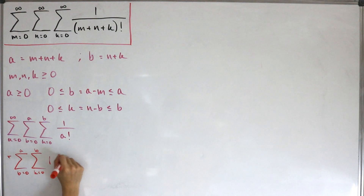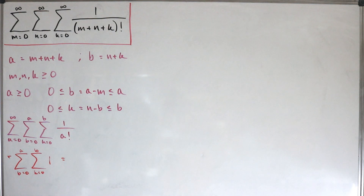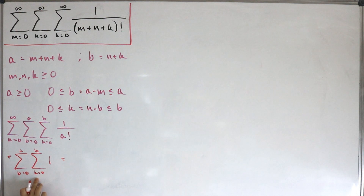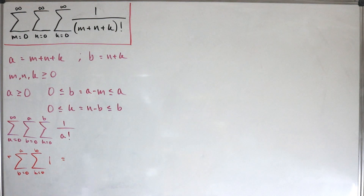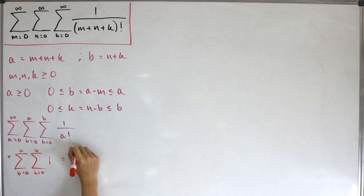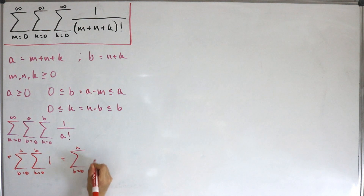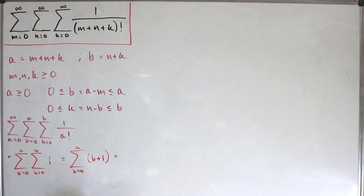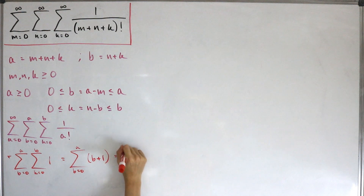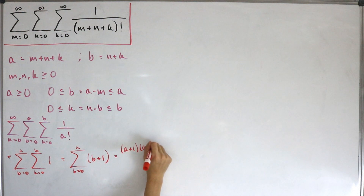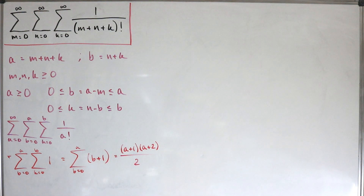Looking at the inner sum, it's simply b plus one — not b, because k starts at zero, so we add one. Then the outer sum becomes the sum from b equals zero of (b+1), and evaluating that gives the well-known summation identity: (a+1)(a+2) divided by 2.